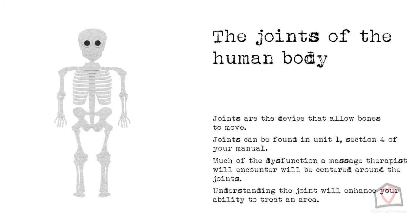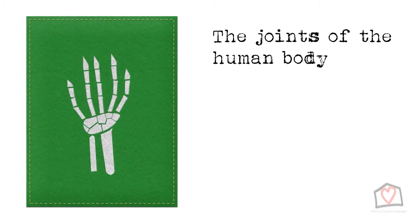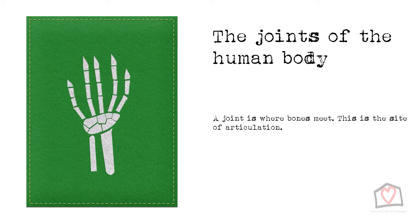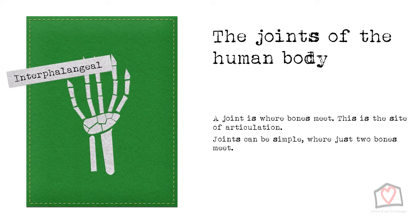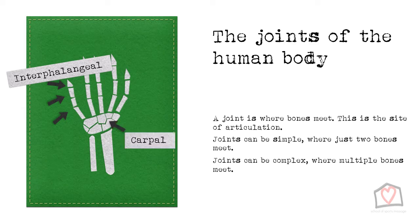Understanding the type of joint, its normal ranges of movement, and the support mechanisms that stabilise that area will enhance your ability to address and successfully treat the area. In its most basic of definitions, a joint is where bones meet — this is the site of articulation. This can be a simple joint where just two bones meet, such as the interphalangeal joints, or alternatively it could be complex, where multiple bones meet, such as the carpal joints of the wrist.